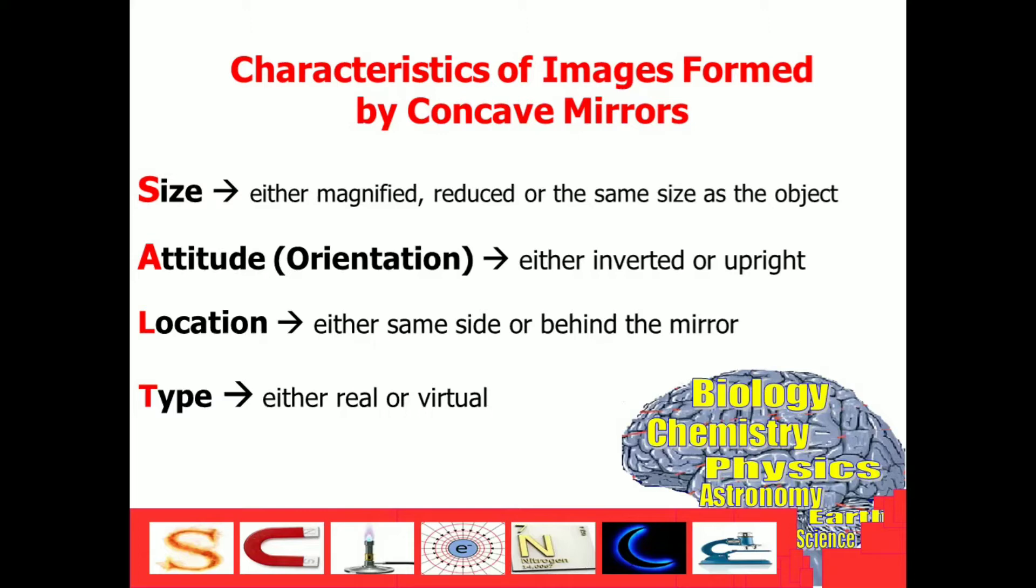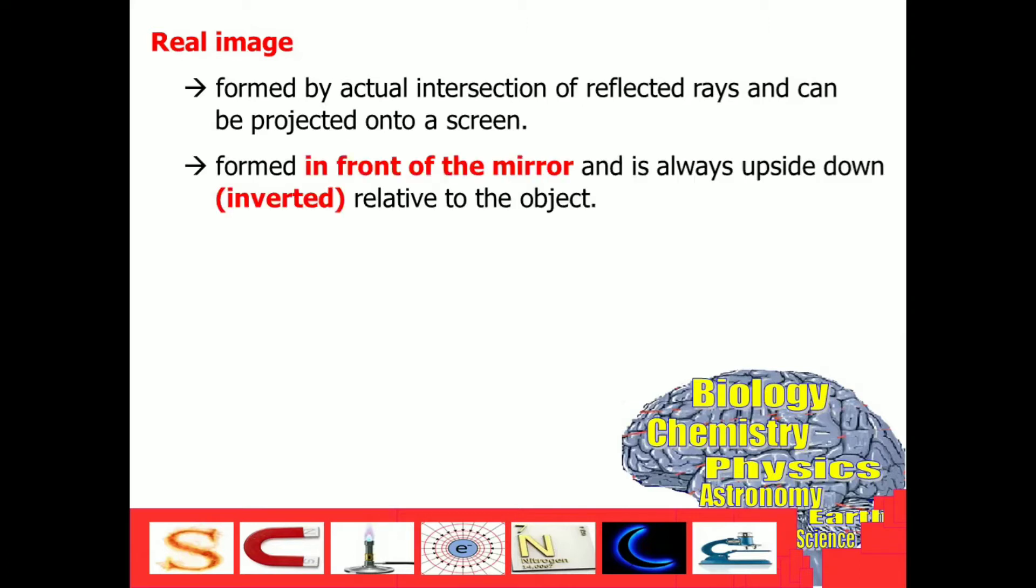Let's differentiate first what is a real image and a virtual image. Real image is formed by actual intersection of reflected rays and can be projected on a screen. For us to tell that an image formed is a real image, you have to remember this.